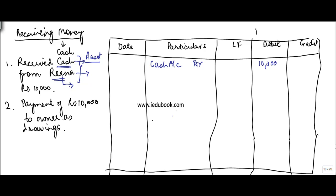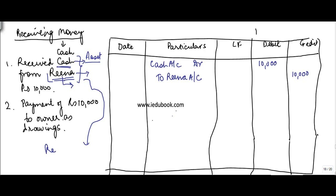Rena is a personal account. There could be two situations: one, this could be some kind of a loan or liability — if you receive money from someone, you credit it, since increase in liability is credited. Another situation is that Rena was supposed to pay money to the business, meaning something was given to her earlier or it was a recoverable. In both cases, Rena's account would have shown a debit balance earlier.